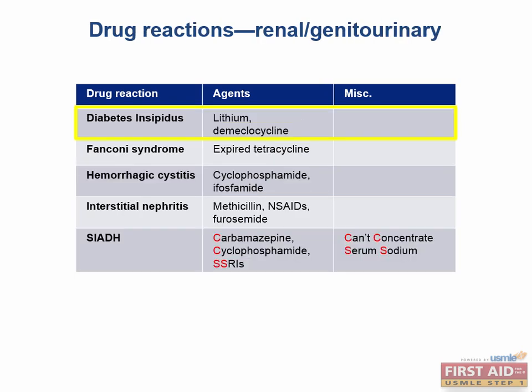Moving on to our GU and renal drugs, we see that some drugs can cause diabetes insipidus. The two drugs that cause diabetes insipidus as one of their side effects or toxicities include lithium and demeclocycline. Diabetes insipidus is simply caused by a deficiency of ADH, or antidiuretic hormone.